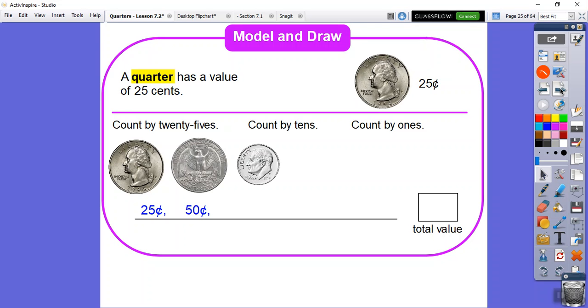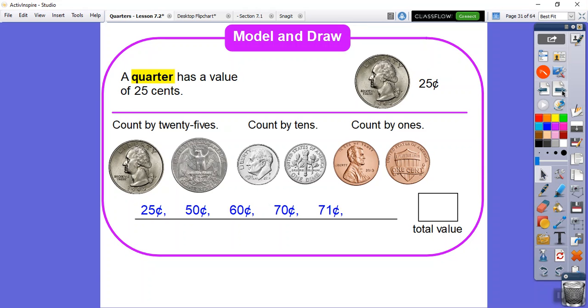Now we're going to add a dime, which is 10 cents. So 50 plus 10 is 60 cents. We're going to add another dime, another 10 cents. So 60 plus 10 is 70. We're going to add a penny. So 70 plus one is 71. And then one more penny. So 71 plus one is going to give us 72. So the total is 72 cents.